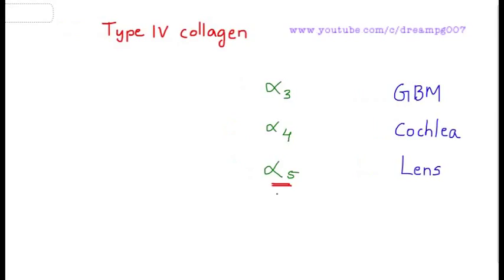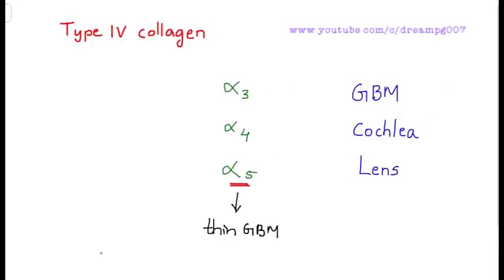Mutation in any of these subunits can lead to a syndrome called Alport syndrome. Most commonly the mutation is seen in α5 subunit. Portions of the glomerular basement membrane represented by the affected α subunit...